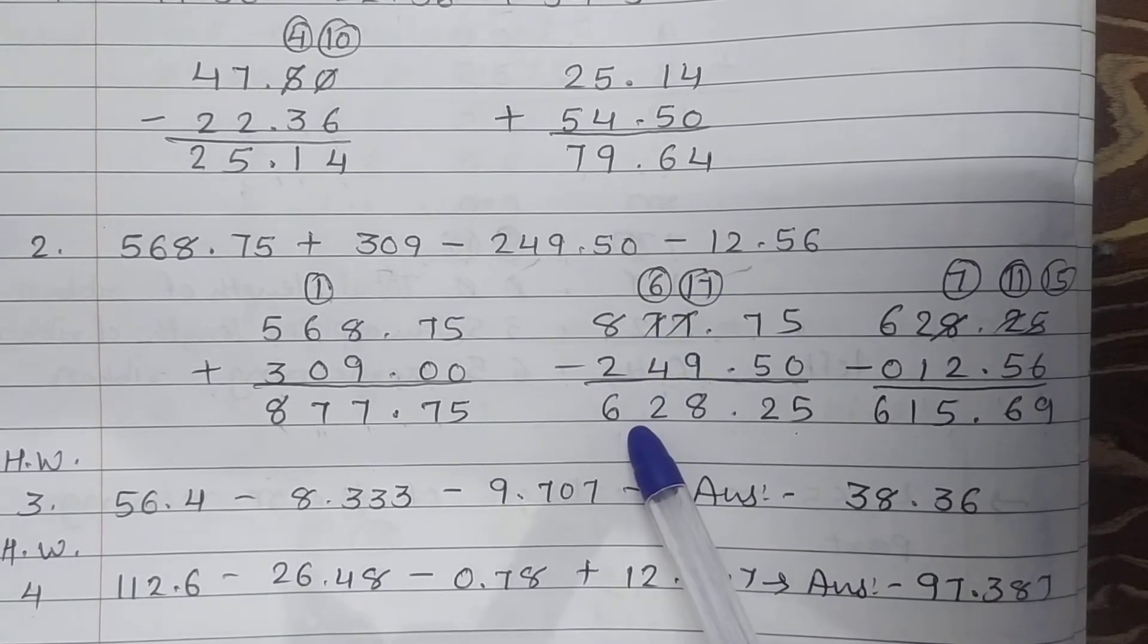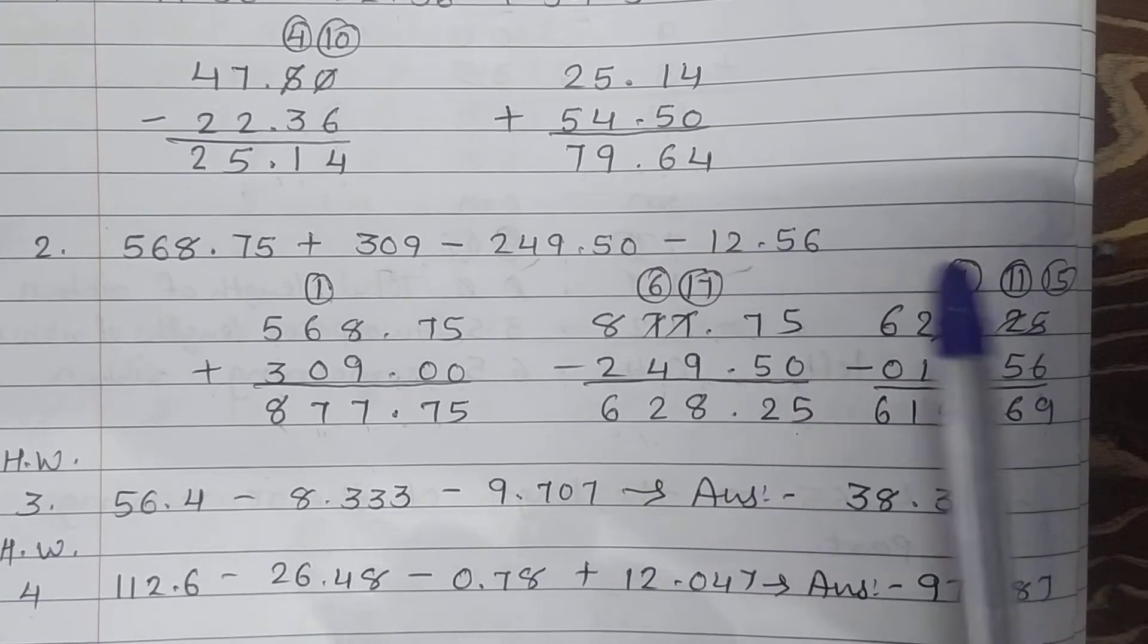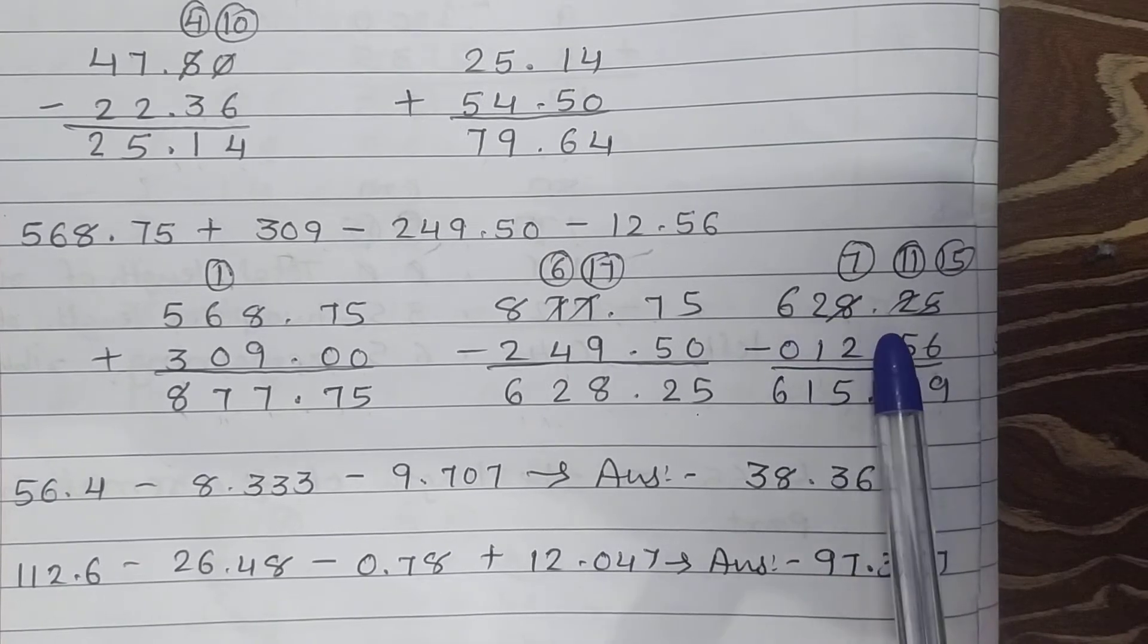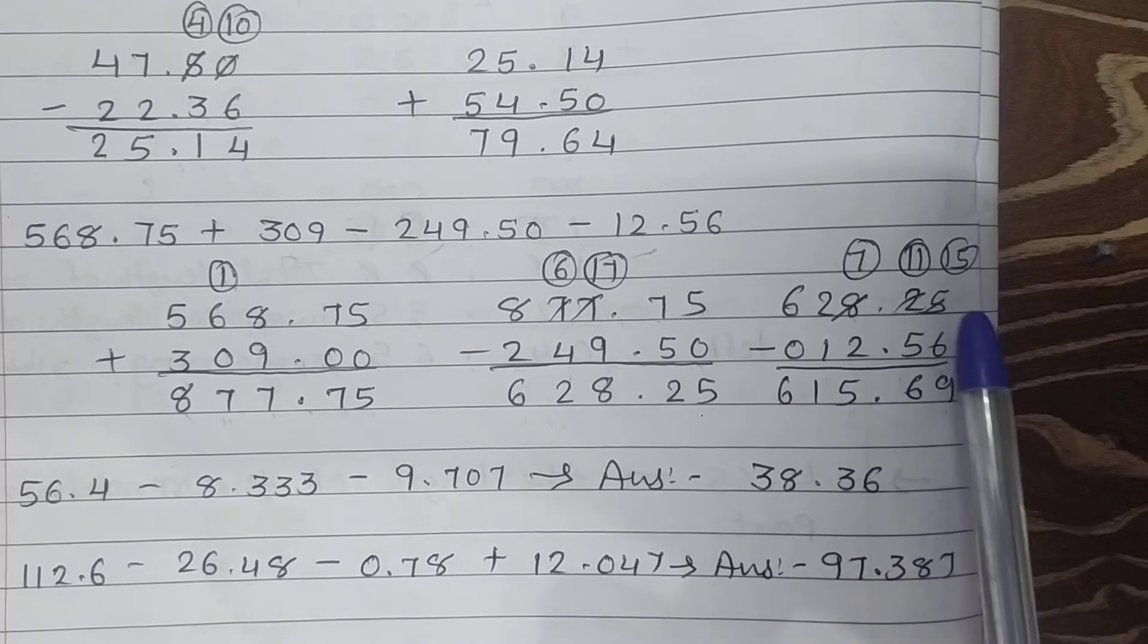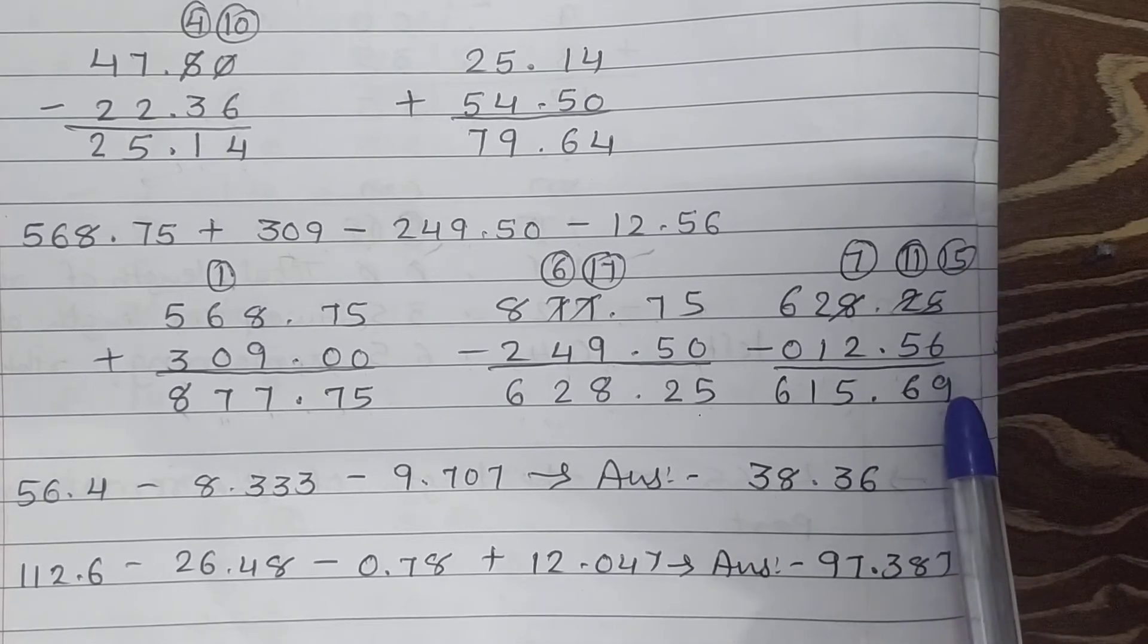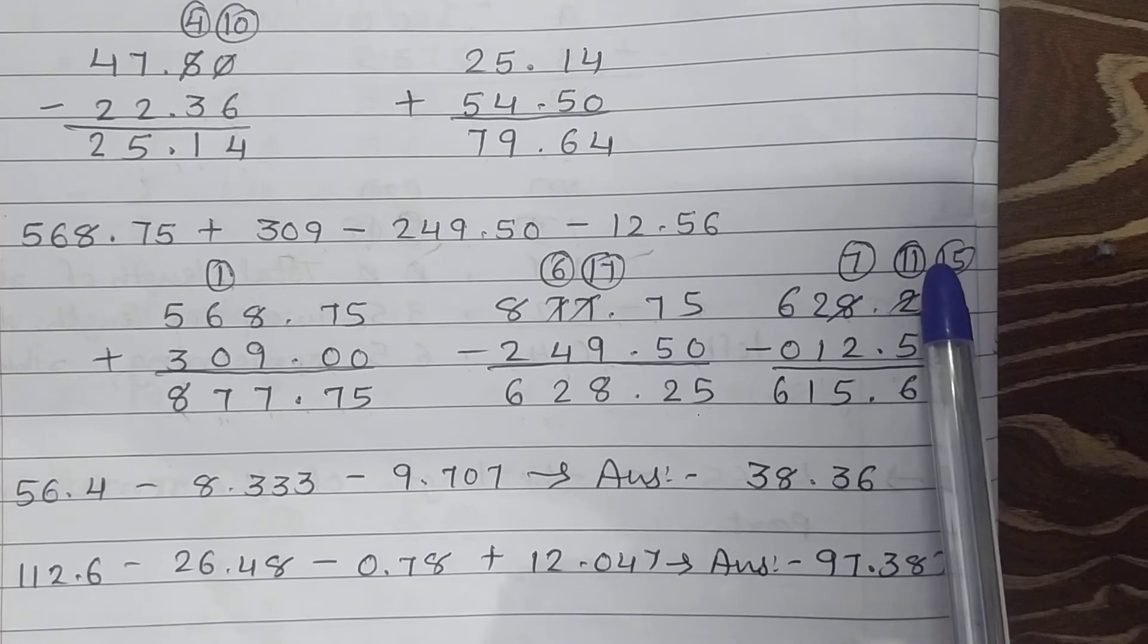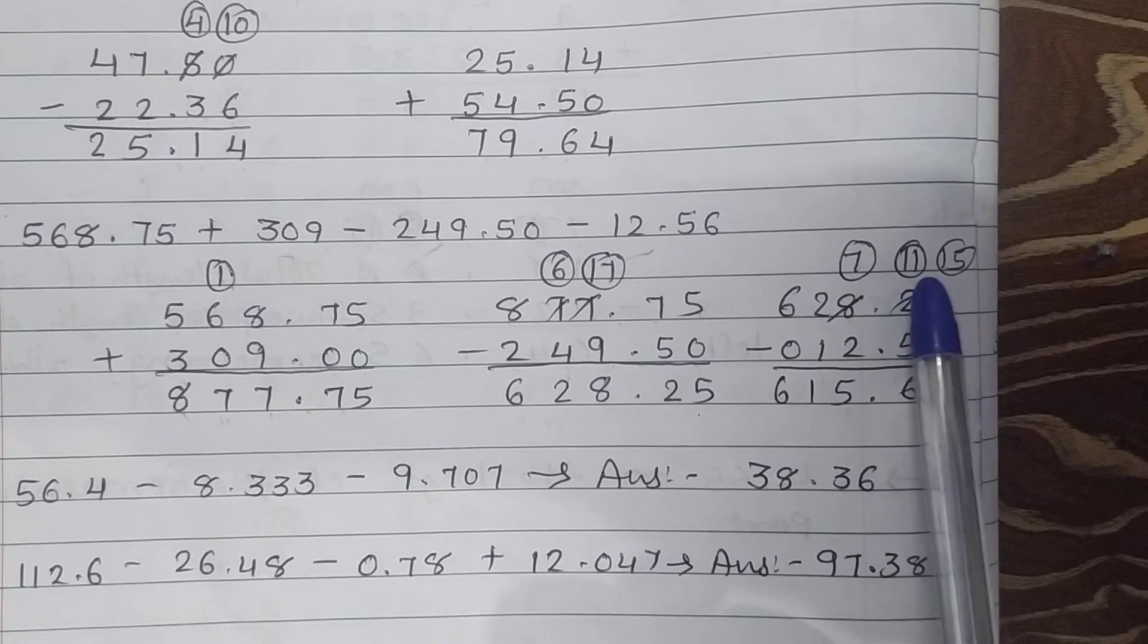Now from this answer we will subtract 12.56. So 628.25 minus 12.56. 5 minus 6 is not possible, so take 10 borrow. 10 plus 5 is 15, 15 minus 6 is 9. Cut 2, less than 2 is 1. But 1 minus 5 is not possible, so take 10 borrow.